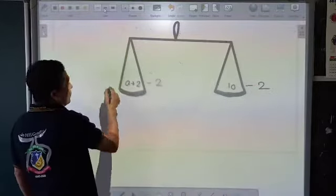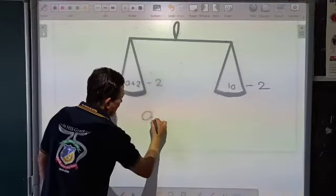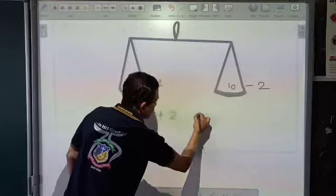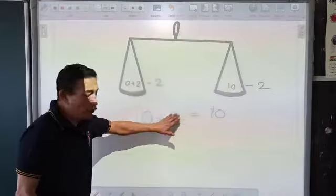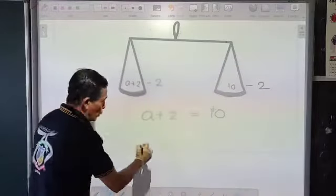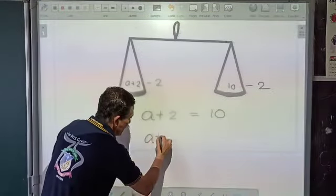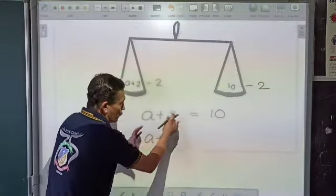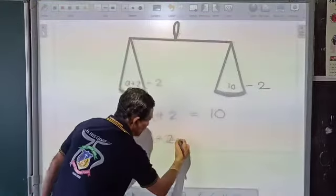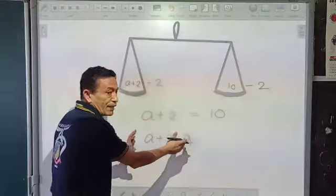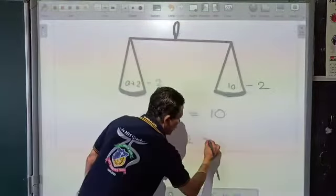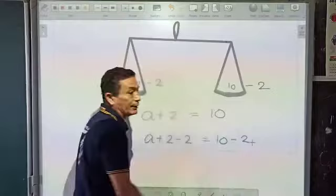Keeping this in mind, I can say from the same equation, a plus 2 is equal to 10. Now if I want to remove this 2, what I can do is a plus 2, from here I want to remove 2. That means I can subtract 2. But if I subtract 2 from the left hand side, I also have to subtract 2 from the right hand side.